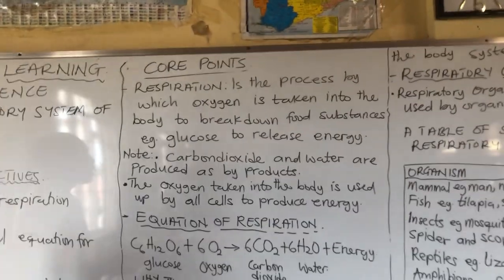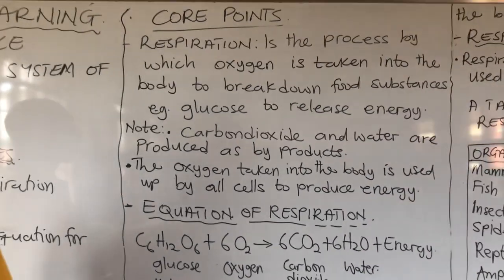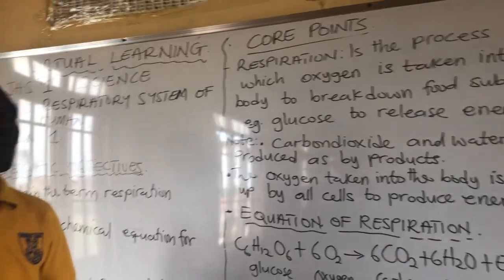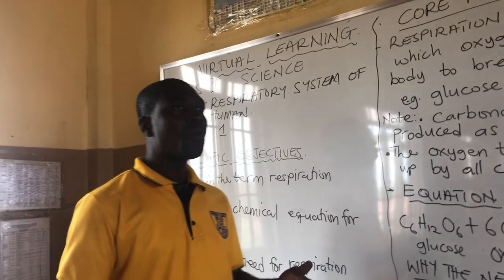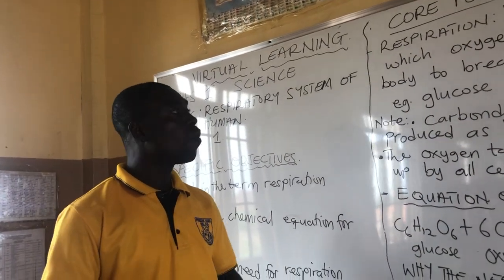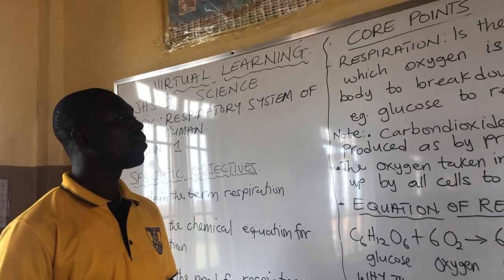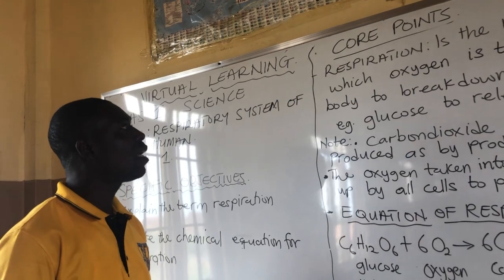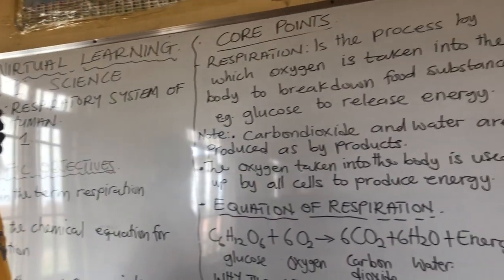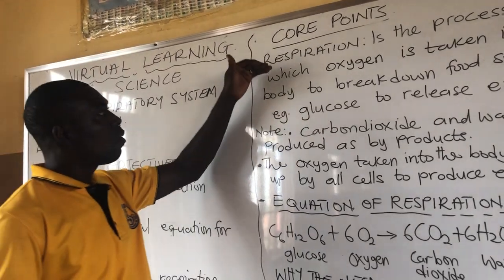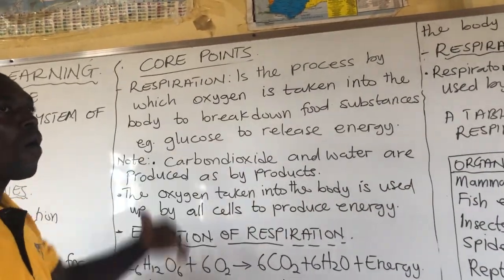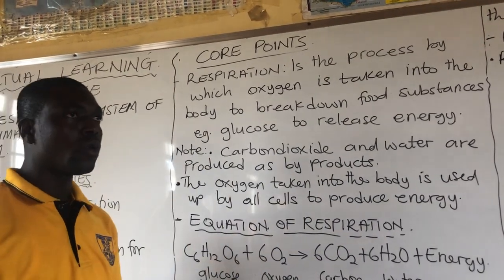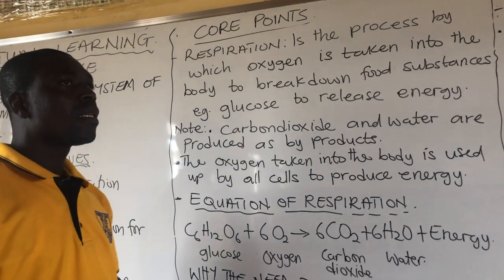Now, to proceed — what is respiration? Respiration is one of the life processes. Some of the life processes include feeding, reproduction, movement or locomotion, excretion, and growth. Today we are looking at the respiration aspect of the life processes in humans or animals. Respiration is a process by which oxygen or air is taken into the body to break down food substances such as glucose, to release energy in the body.